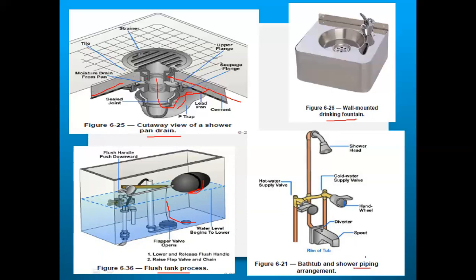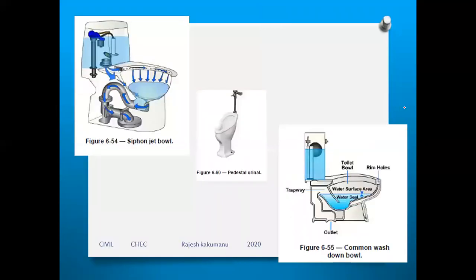The bath and shower piping arrangement shows two levers — for hot and cold water supply. There are hand wheels, a diverter, and a spout (tap/faucet). The pipe, shower bar, and shower head are also shown. This type of plumbing fixture setting can be seen in modern, good-quality bathrooms.